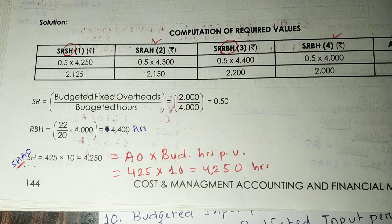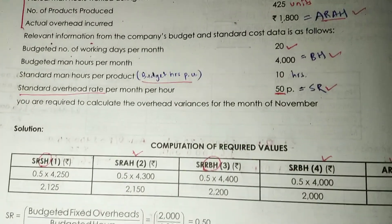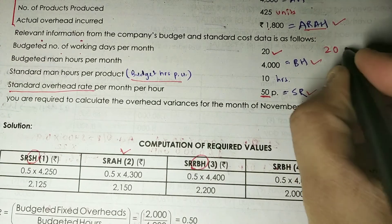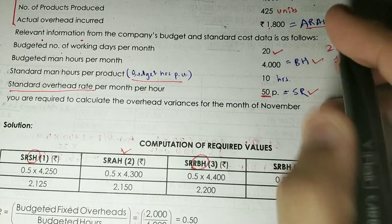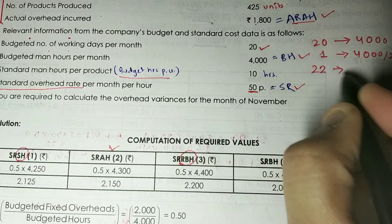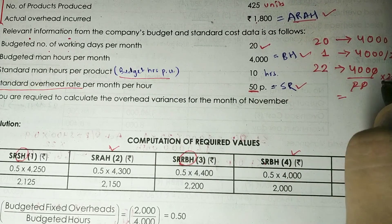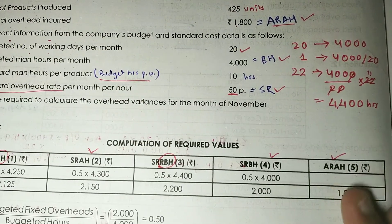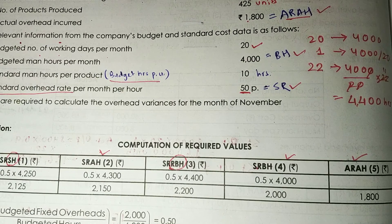Next, we calculate Revised Budgeted Hours (RBH). Budgeted man hours per month is 4,000 for 20 days. So per day it is 4,000 ÷ 20. For 22 actual days: (4,000 ÷ 20) × 22 = 4,400 hours. So RBH = 4,400 hours. We now have all the information needed to calculate all six variances.